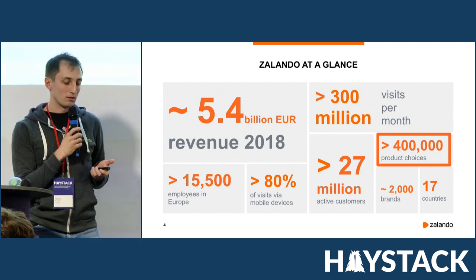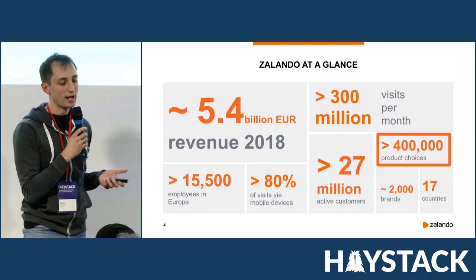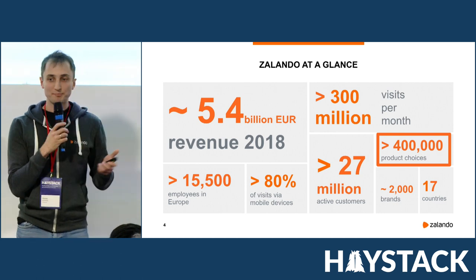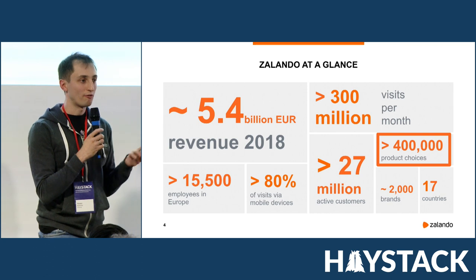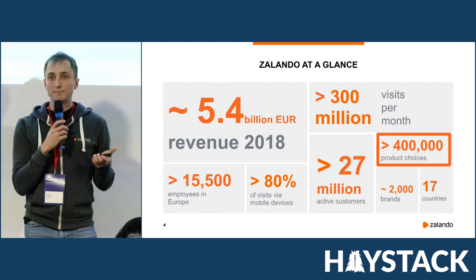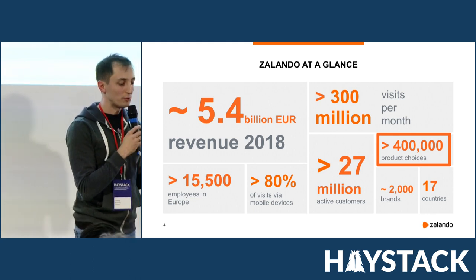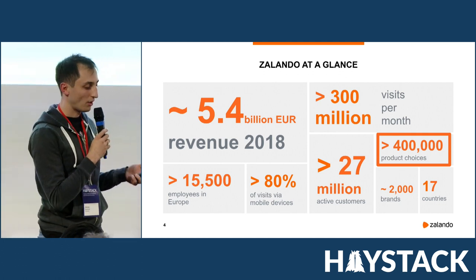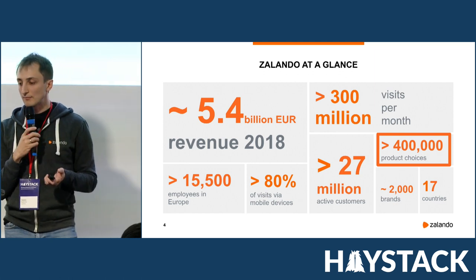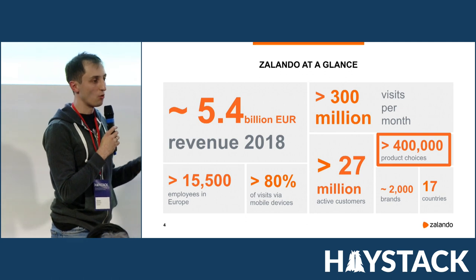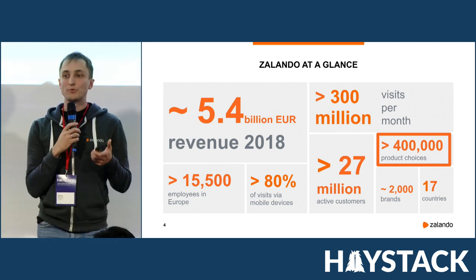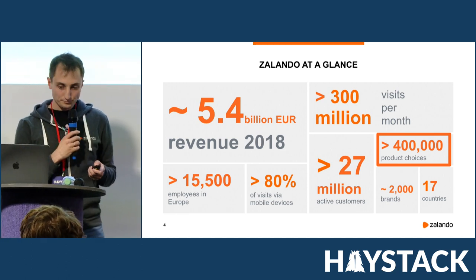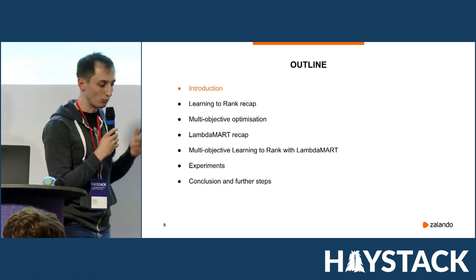When I joined the ranking team more than a year ago, our ultimate goal was to increase user engagement. We successfully achieved that goal by applying suitable machine learning techniques. But our solution had one side effect: it was giving a lot of visibility to non-fashionable articles. Although many people actually buy them, we believe that giving too much visibility to such articles creates less inspiration for users and hurts their experience and the image of Zalando in the long term. That's how we got this other goal — to keep the catalog of Zalando inspiring and fashionable — and this is what motivated the work I'm presenting today.